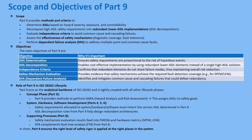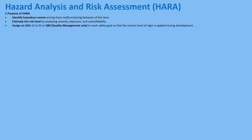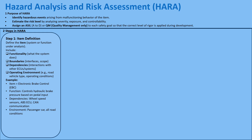That journey starts with the hazard analysis and risk assessment — HARA. The goal is to identify hazardous events if a system malfunctions, and then assign an automotive safety integrity level, an ASIL — from A, the lowest rigor, up to D, the highest, or sometimes QM, just standard quality management. The HARA process has to be structured. The first step is item definition — you can't assess risk if you don't know exactly what the item or system is, what it does, its boundaries, and what it depends on. The sources use a great example: an electronic brake control system, an EBC.